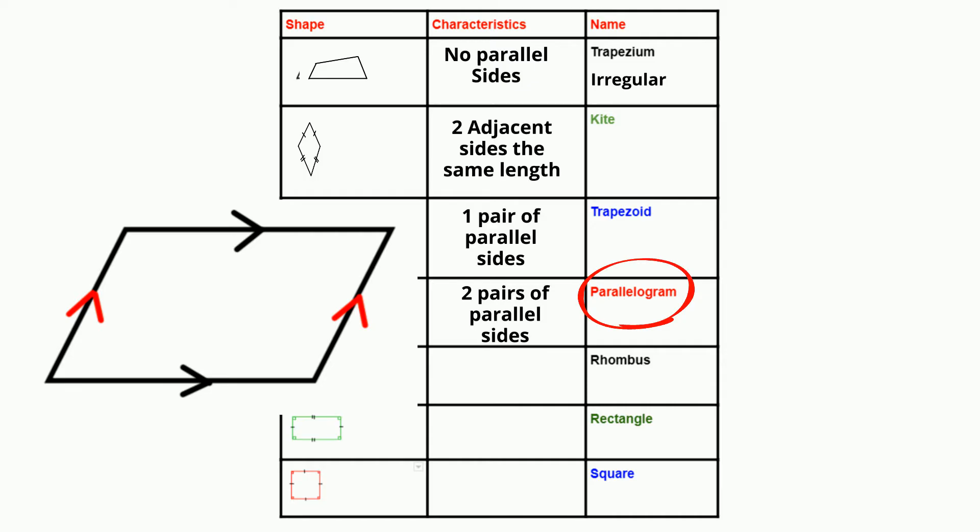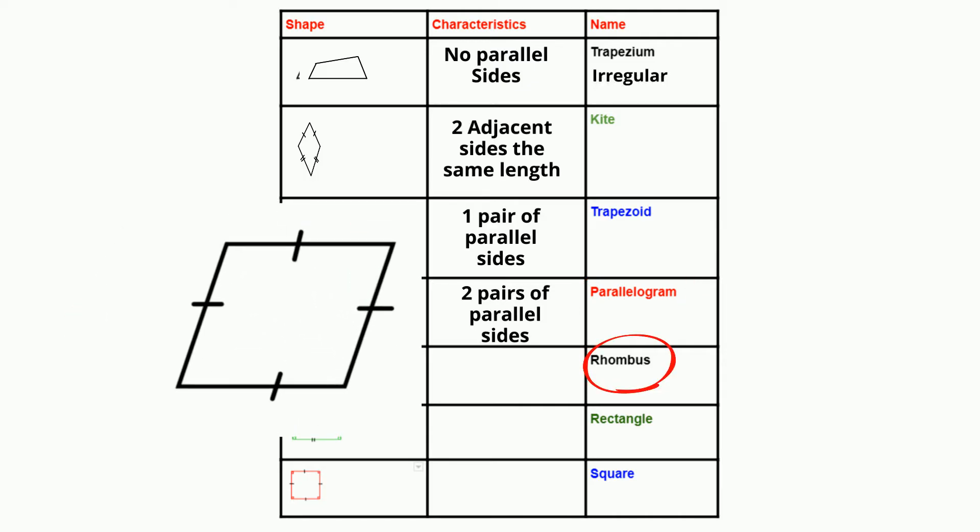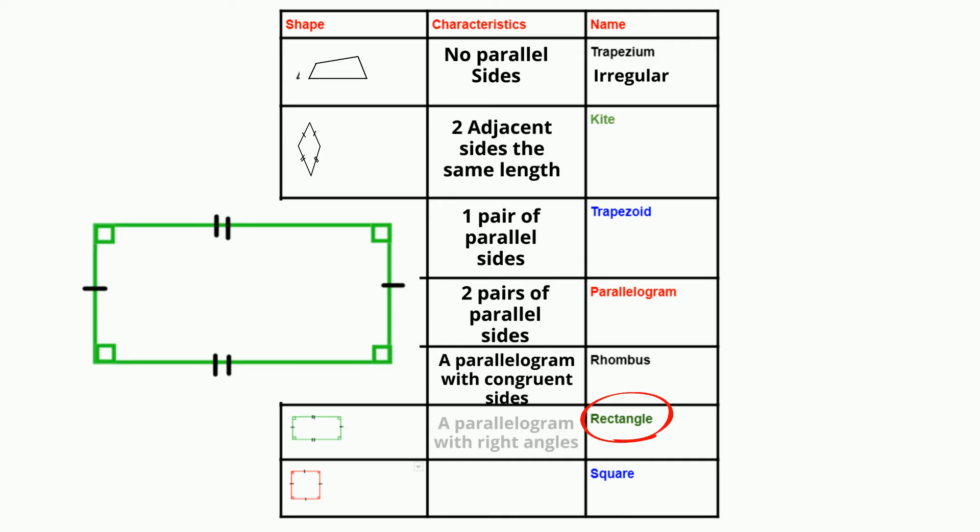Now, a little bit more specific. A rhombus is a parallelogram with congruent sides. A rectangle is a parallelogram with right angles.